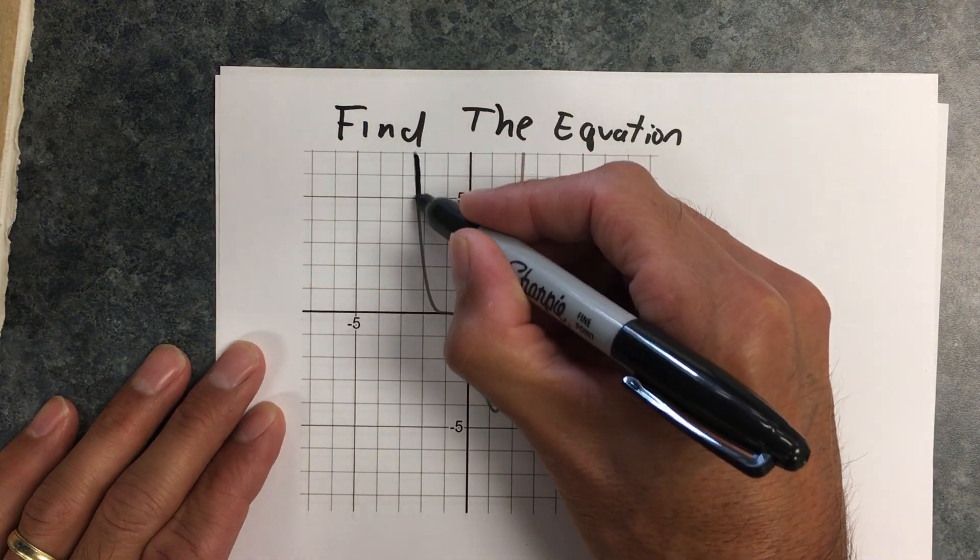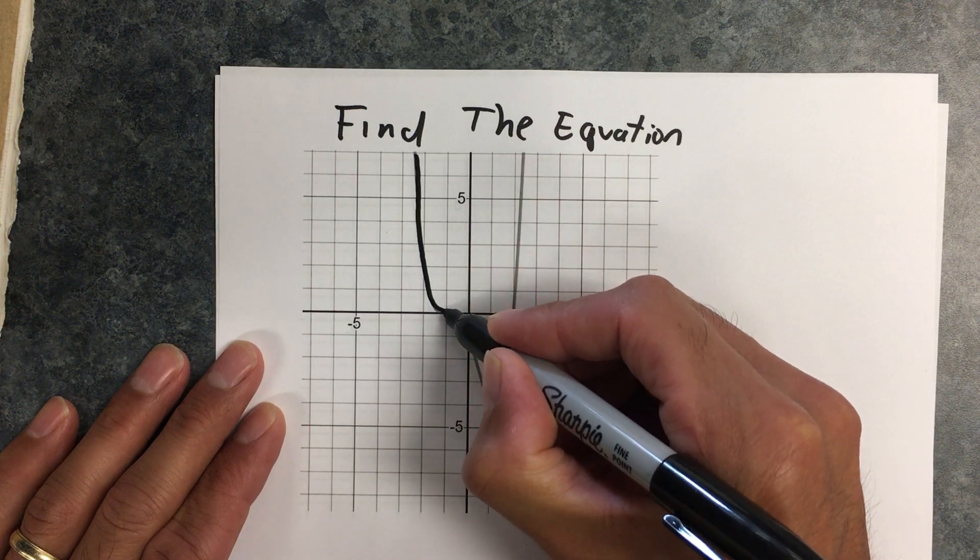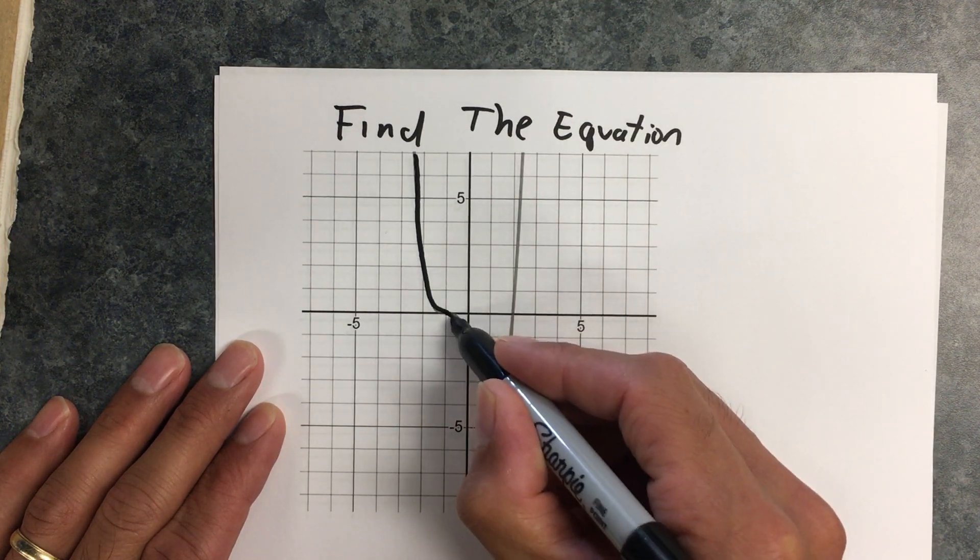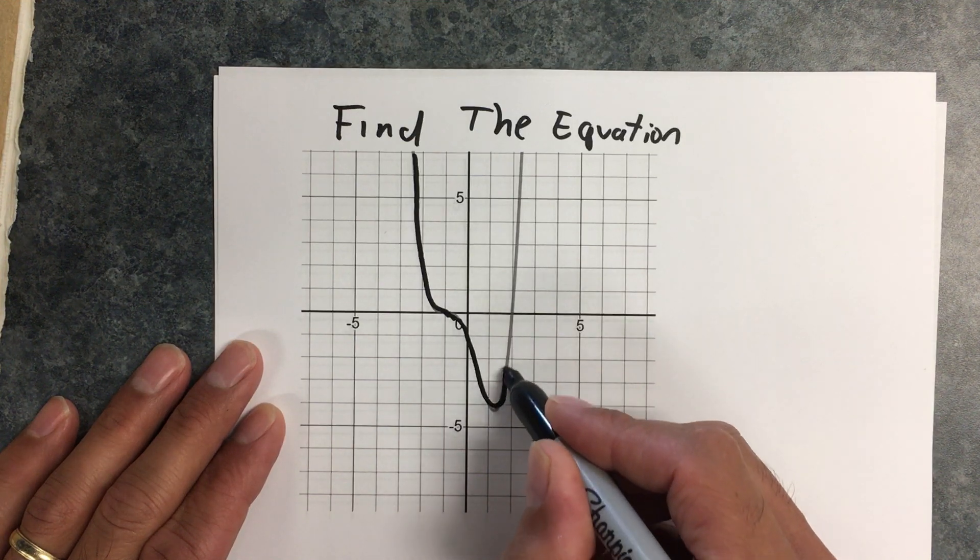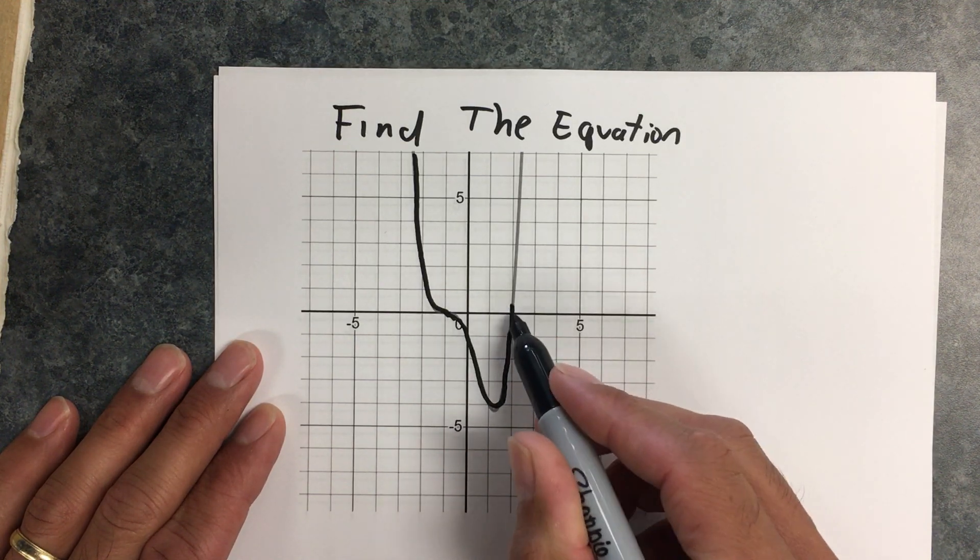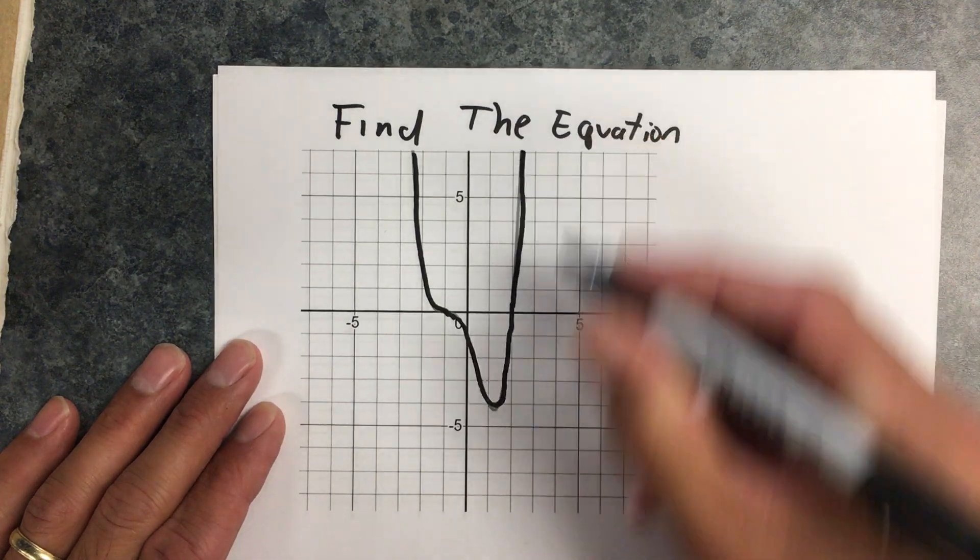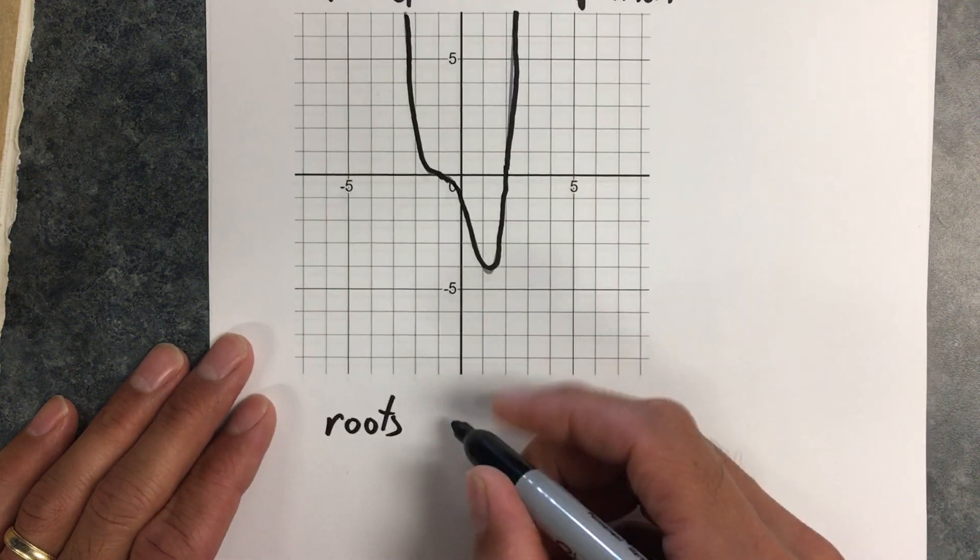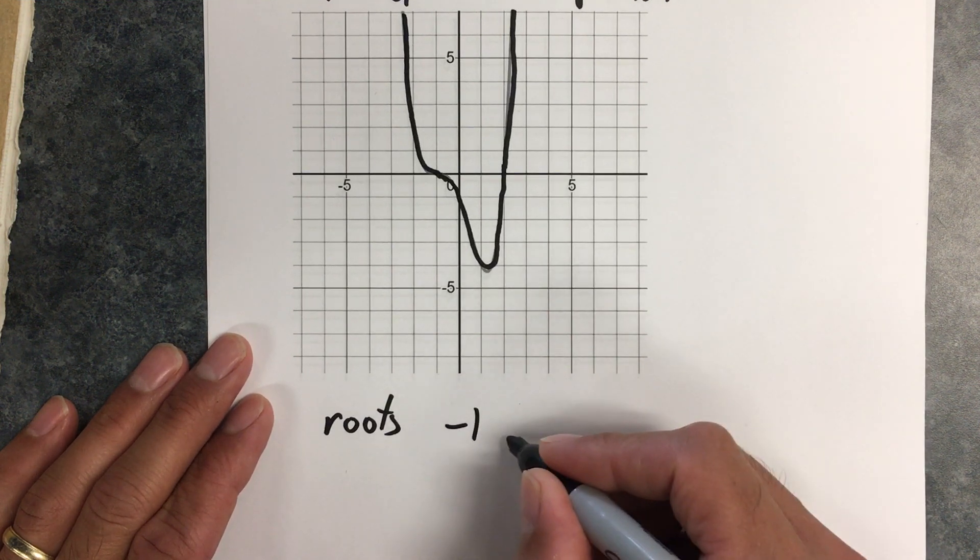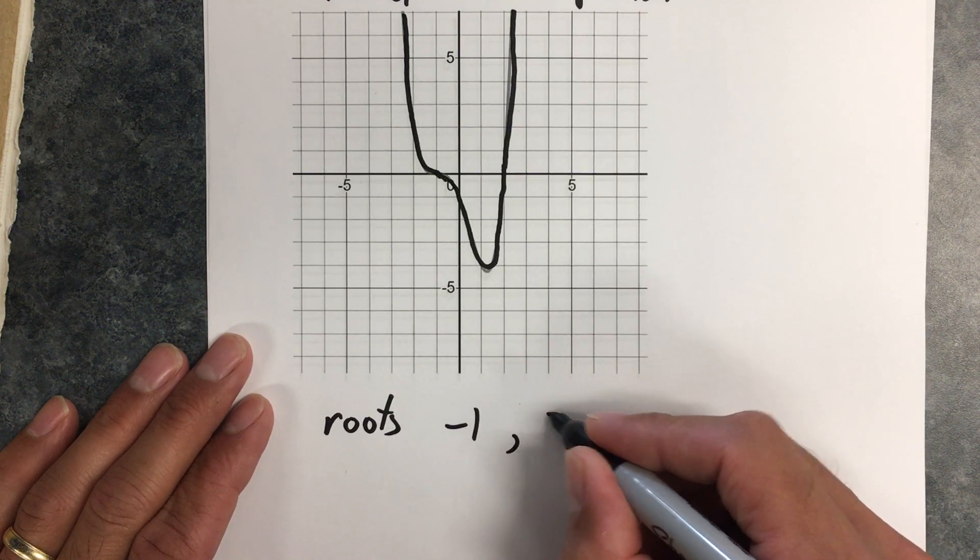If you have a look at this polynomial, see how it curves down? There's a root right here at negative 1, then it keeps going, comes back up, and there's a root here at positive 2. So my roots are negative 1 and positive 2.